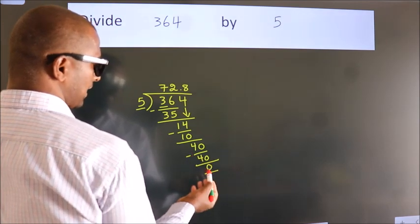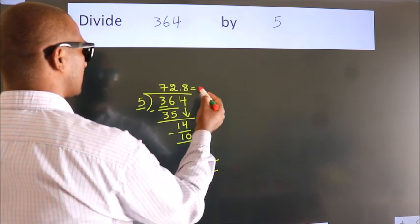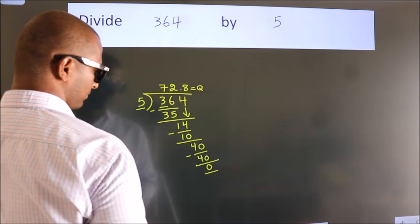We got remainder 0. So this is our quotient: 72.8.